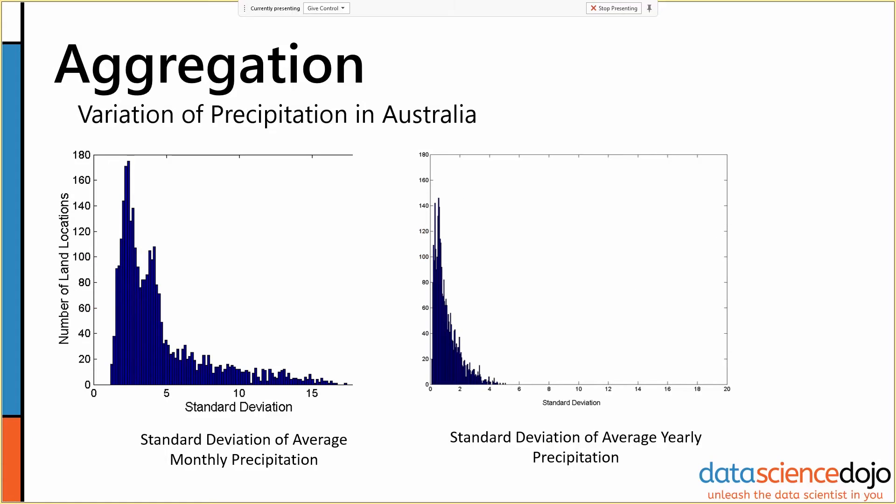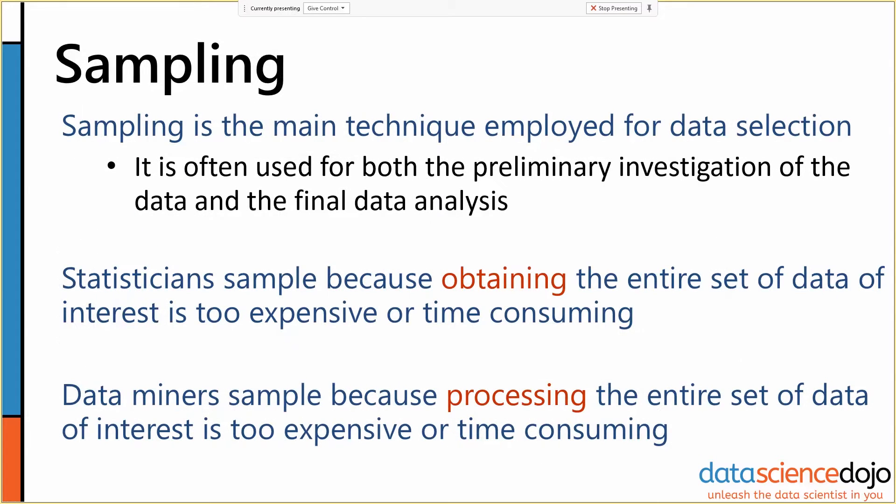Another very common method of preprocessing is sampling. Those of you, like Ron, who are from a statistics background will understand sampling quite well.